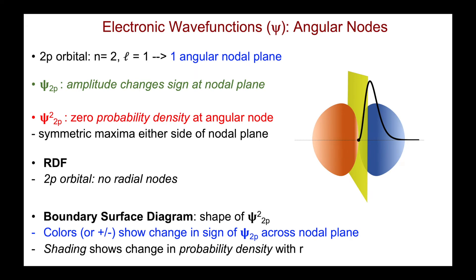I can also include the colors, or I could just add positive and negative signs, to indicate the change in phase of psi 2p across the nodal plane.